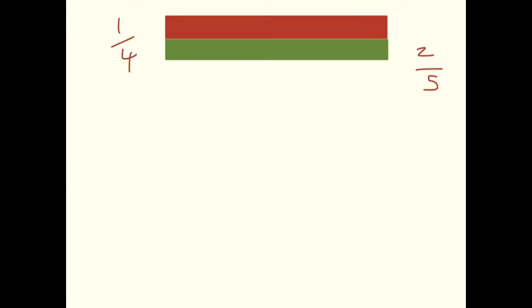The next step after drawing two bars of equal size is to divide this first bar into one quarter. So I need four equal groups and I'm going to shade in one of those equal groups. So now, you should be able to see I've divided this top bar into four equal groups and I'm shading one of them to make one quarter.